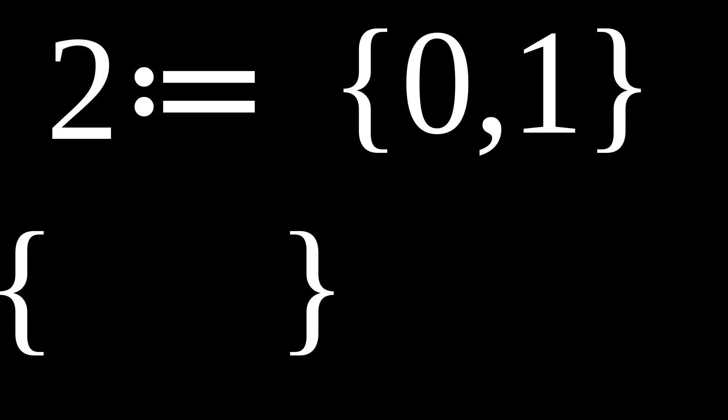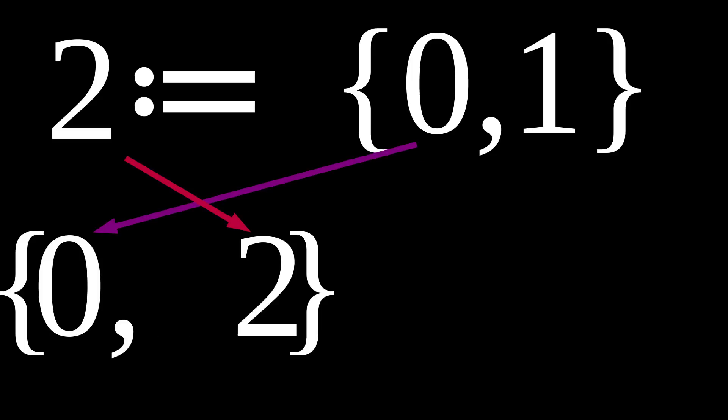Here's zero in curly braces, let's call that one. Two is zero and one in curly braces, and for any number, you can take it and all the numbers it contains and put them in curly braces. This is called the successor of two.